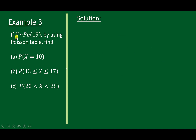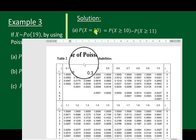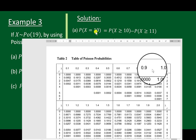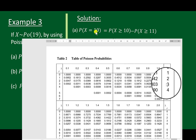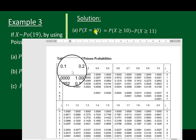Example 3: if x is Poisson distributed with lambda 19, use the Poisson table to find the probability. The Poisson distribution table has lambda values along one axis and values of r or x on both sides, with lambda ranging from 0.1 up to 30. The table starts at page 12 and goes until page 18, where the highest lambda is 30, going up to row 54.